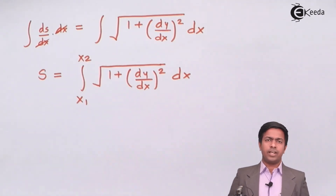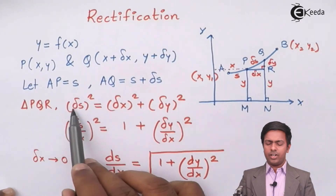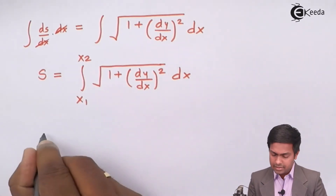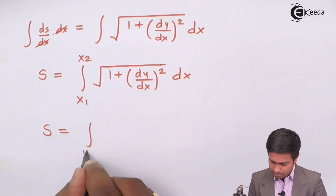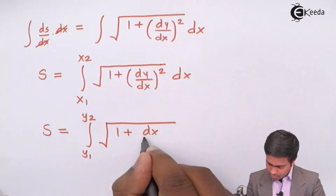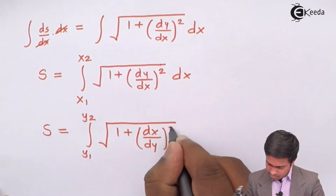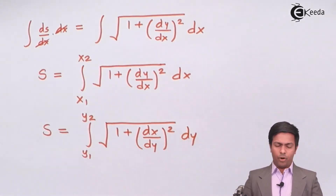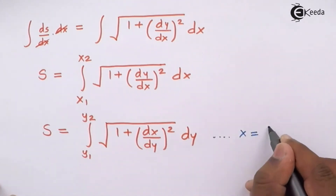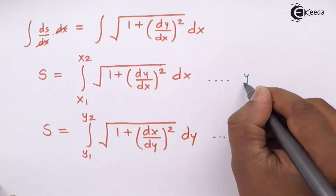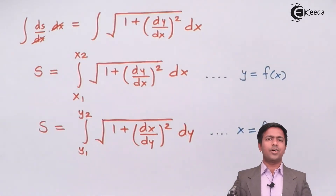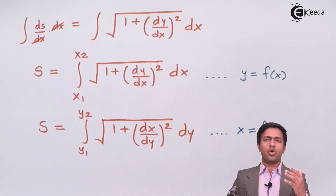If the curve is given as x = f(y), we simply divide throughout by dy instead, and we get a corresponding formula: s = ∫[y₁ to y₂] √(1 + (dx/dy)²) dy. We use this formula if x is given as a function of y, and the previous formula if y is given as a function of x. These are the two formulae for Cartesian curves.